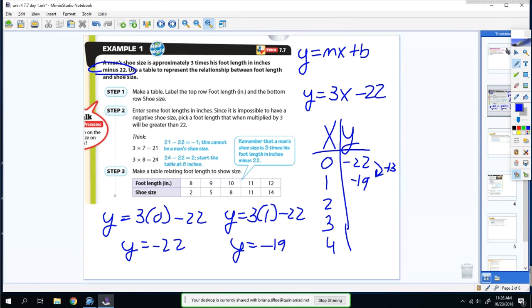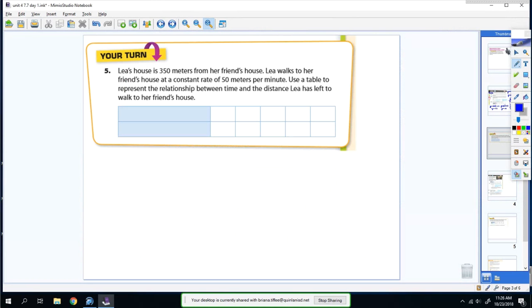So if I add 3 this time, this would be negative 16, negative 13, and then negative 10, and so on. That's all we're doing. So now you try one.